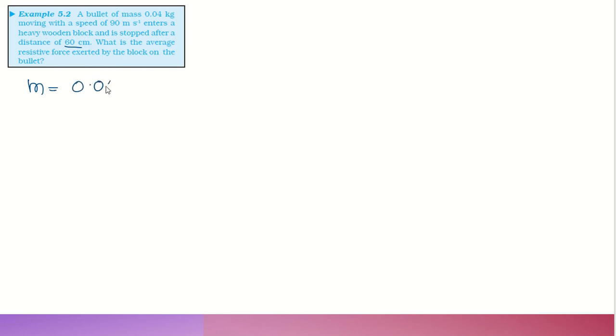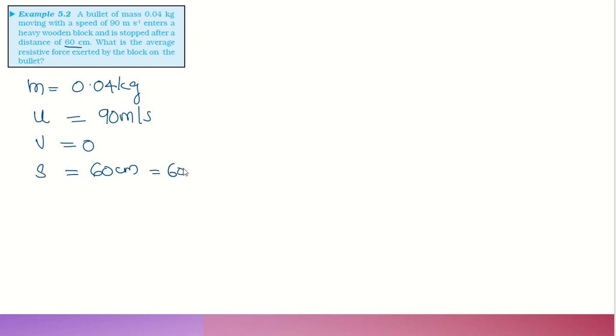Next problem: A bullet of mass 0.04 kg moving with a speed of 90 m/s enters a heavy wooden block and is stopped after a distance of 60 cm. What is the average resistive force exerted by the block on the bullet? Given: mass of bullet = 0.04 kg, initial velocity = 90 m/s, final velocity = 0, distance = 60 cm = 60 × 10⁻² meters.